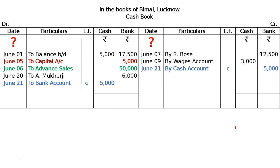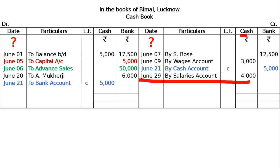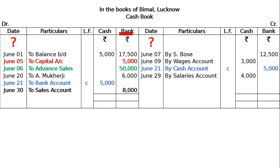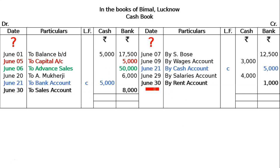Paid office salaries in cash: office salaries account debited to cash account — it is paid by cash. Sold goods in cash and deposited in bank: cash to sales and bank to sales. Then bank to cash — bank account debited to cash account. For June 30th, bank account debited to sales account. Then paid rent by cheque: rent account debited to bank account.